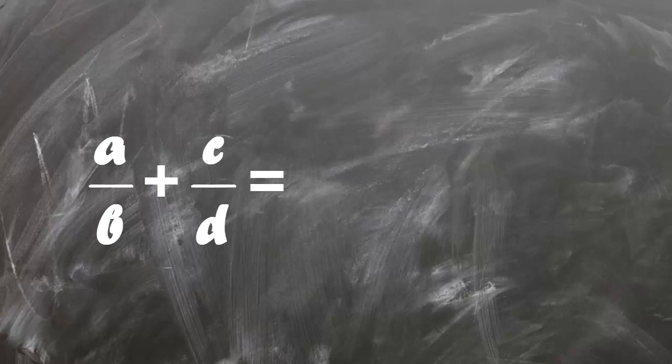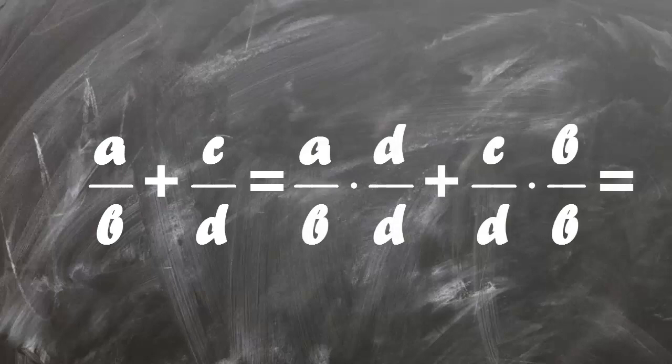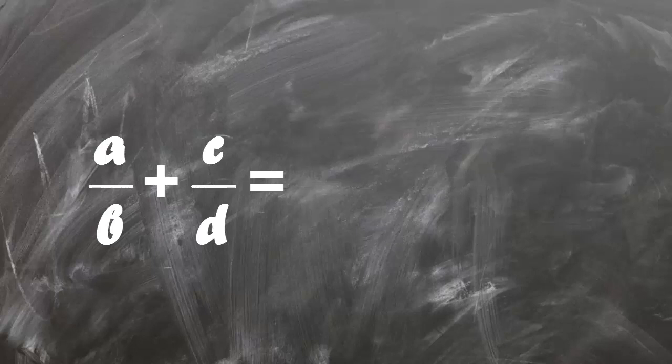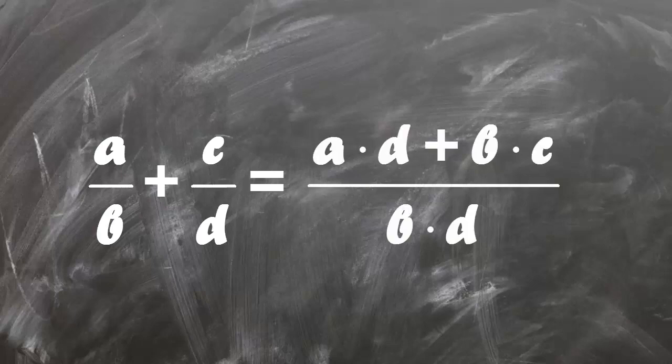So in this case you will multiply A over B by D and then multiply C over D by B. Now when you have common denominator B times D you can add these two fractions and you will get A times D plus B times C over B times D and that's all you have to do.